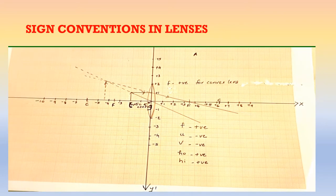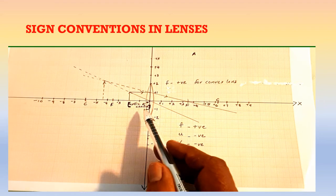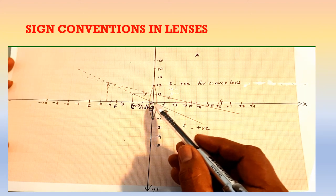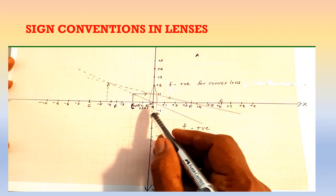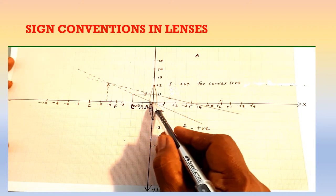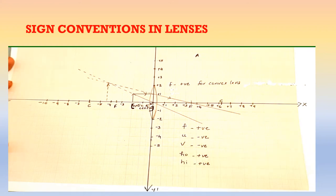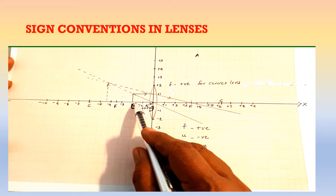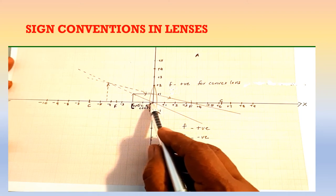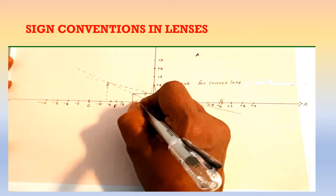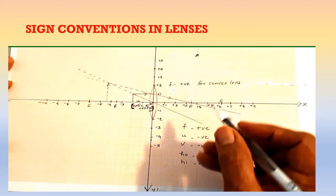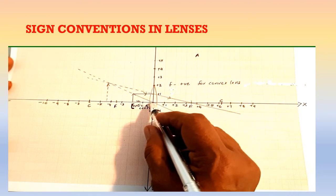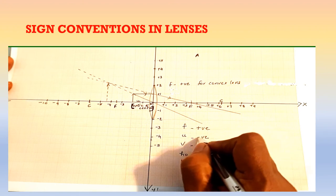Now let us consider the sign convention for image formation in a convex lens. Here is a ray diagram showing image formation in a convex lens. To find the sign convention, we imagine a Cartesian plane with the optical centre as the origin. The object is placed on the left side of the lens, so the object distance U — the distance between the optical centre and the object — is on the left side of the origin.